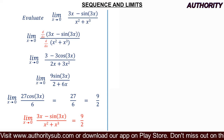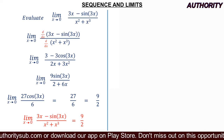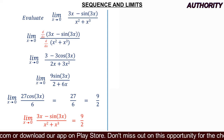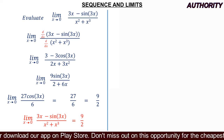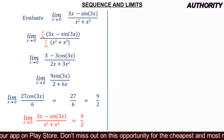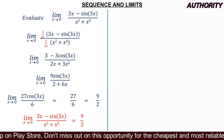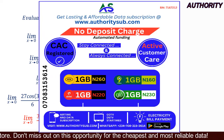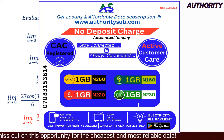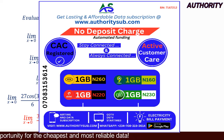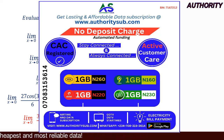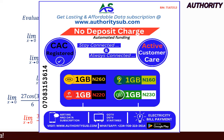Therefore, the limit as x approaches 0 of (3x minus sin 3x) all over (x squared plus x cubed) equals 9 over 2. Thank you very much for watching. If you are new to our YouTube channel, please subscribe, like, and share our videos. Stay blessed.